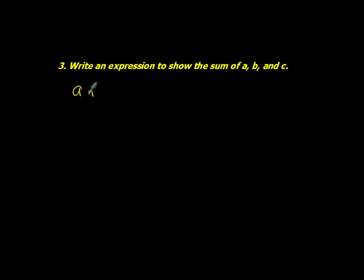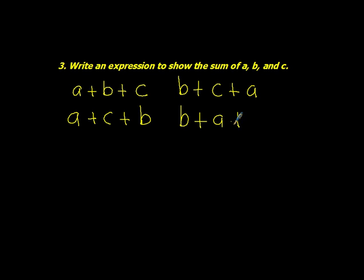We could do A plus B plus C. We could do A plus C plus B. We could do B plus C plus A. B plus A plus C. And the last two, we could do C plus A plus B. Or we could do C plus B plus A. So if you didn't get all six of those possibilities, I know it asks for an expression. But go ahead, write all six down so that we can further understand that order does not matter in addition.